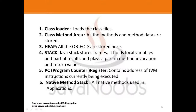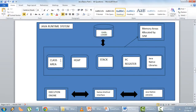The second block is called the class method area. All the methods and method data are stored in the class method area. If you can see the diagram, this is the class method area — so all the methods and whatever you write inside a method will be stored here.